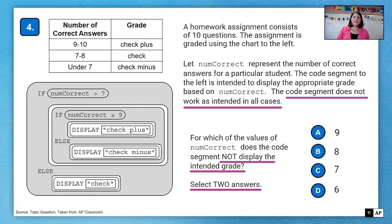So in this case, let's just try them. So we try nine. Nine is greater than seven. Nine is greater than or equal to nine. So it will display check plus. That one seems to be accurate, which means it's not one of our answers because we're looking for one that does not display the intended grade. Moving on to eight. Eight is greater than seven. And then we go into the second if eight is not greater than or equal to nine, so else it will display check minus. That is not what eight is supposed to display. So therefore, it is one of our answers.